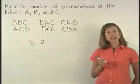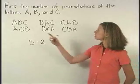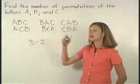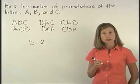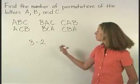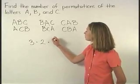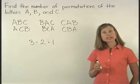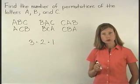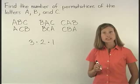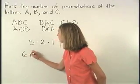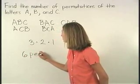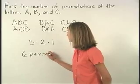And finally, there was one letter left that we could choose for the last position in our permutation, so we have times one. Three times two times one is equal to six. So there are six permutations of the letters A, B, and C.